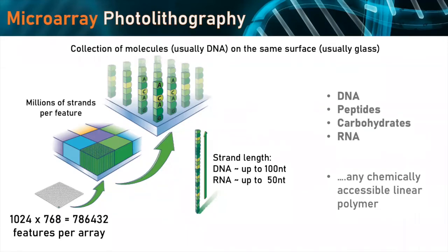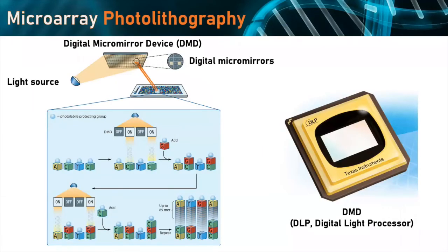So how do we actually control where we synthesize those sequences? We use photolithography — UV light at 365 nanometers. The way we control where the synthesis is going to take place uses a small device called the digital micromirror device, or DMD. It's basically an array of very tiny mirrors about 14 microns in size. They're all electronically addressable and can be tilted in just two positions, which we call on and off. Depending on how they're tilted, they reflect UV light onto the surface of your microarray or away from it. The UV light is produced in our case from an LED source.